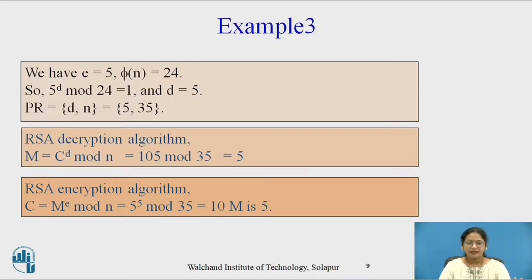So now private key is ready: d=5, n=35. Public key is already ready: e=5, n=35. Now decryption algorithm: m equals c raised to d mod n, so 10 raised to 5 mod 35. By calculation we get original message 5. Now we will cross check: ciphertext m raised to e mod n, that is 5 raised to 5 mod 35 equals 10. So our calculation is correct.